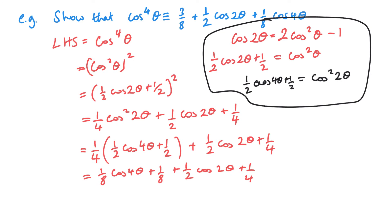And now it's about expanding and simplifying. So I've got 1 eighth cos 4 theta plus 1 quarter.